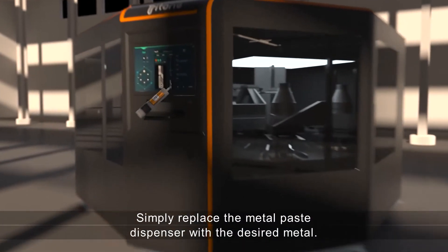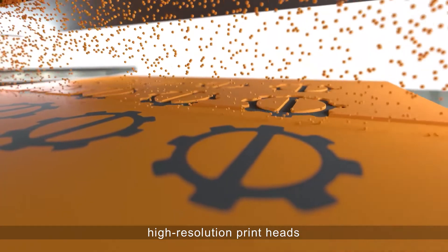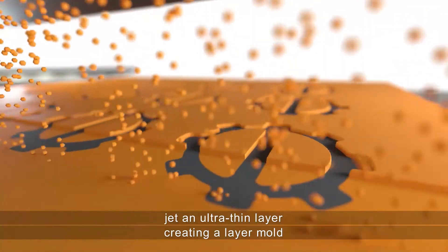Simply replace the metal paste dispenser with the desired metal. High-resolution printheads jet an ultra-thin layer, creating a layer mold.